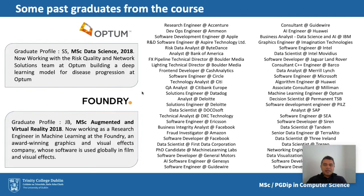This slide lists some examples of jobs our past graduates have undertaken after completing the MSc in Computer Science program. Jobs range from software engineering and software development in the IT sector, to roles such as data analysts or data scientists in the financial or fintech sector. Some students get jobs in digital media companies such as games companies or 3D animation companies like Boulder Media. Many students also continue into research, joining as PhD students either within the school or at universities abroad.